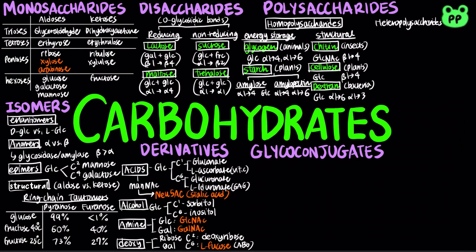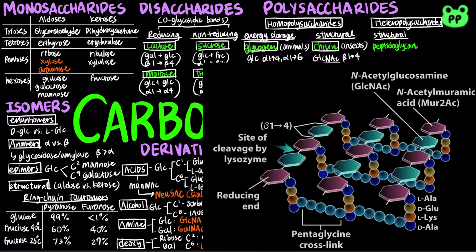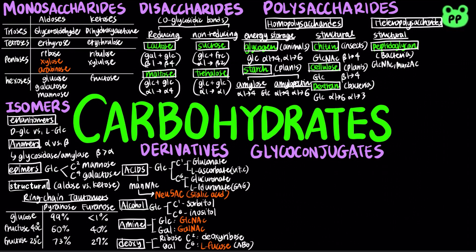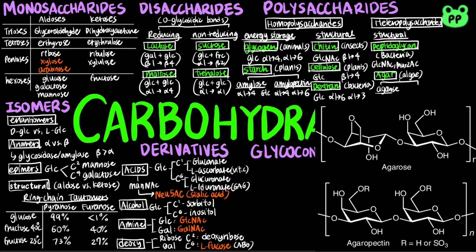Structural heteropolysaccharides include peptidoglycan, which is found in bacterial cell walls. It is a heteropolymer of alternating beta-1,4-linked N-acetylglucosamine and N-acetylmuramic acid. Agar is found in the cell walls of seaweeds and other algae and contains two components: agarose and agaropectin. Agarose is a linear polymer made up of repeating units of D-galactose and L-galactose. Agaropectin is made up of alternating units of D-galactose and L-galactose heavily modified with acidic side groups, such as sulfate and pyruvate.